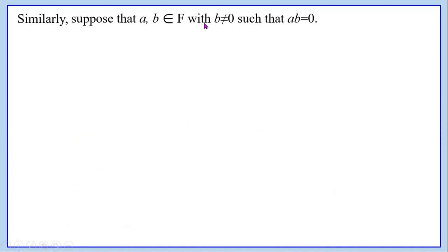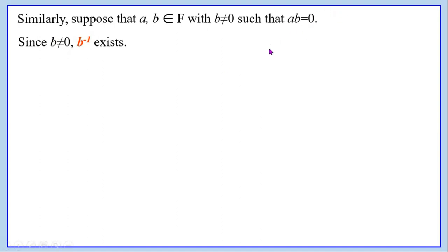Similarly, suppose a, b belong to f with b ≠ 0 such that a·b = 0. Our aim is to show that a = 0. Since b ≠ 0, we know that in a field, inverse exists for every non-zero element. Therefore, b is a non-zero element, so b⁻¹ exists. Now a·b = 0 is given. We post-multiply both sides by b⁻¹ and apply the associative property as done in the previous case. And zero · b⁻¹ = 0.